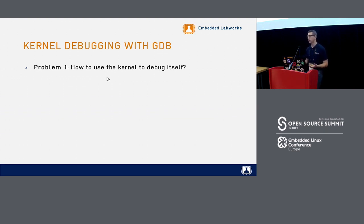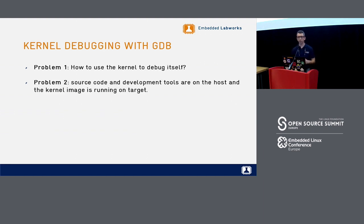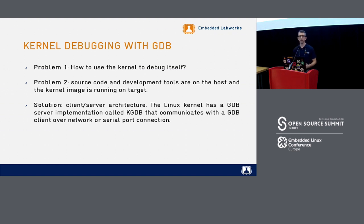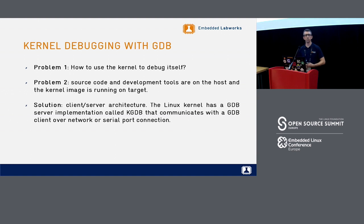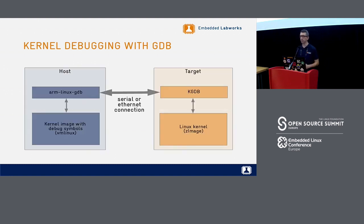Let's talk about debugging the kernel with GDB interactively. The problem is you want to use GDB to debug the kernel itself — it's not an easy task. You have the source code on one side and the kernel running on the target on the other side. The solution is a client-server architecture: you need a GDB server in the kernel and a GDB client on your machine. The kernel has an implementation of the GDB server called KGDB, and you can use it to debug the kernel.